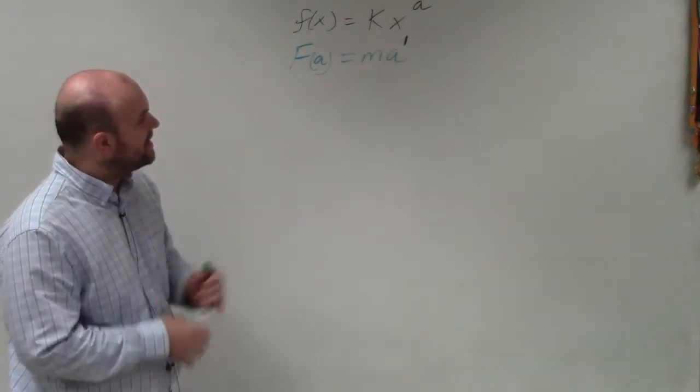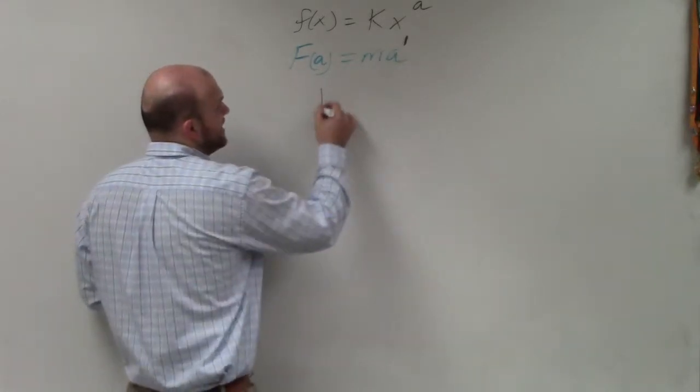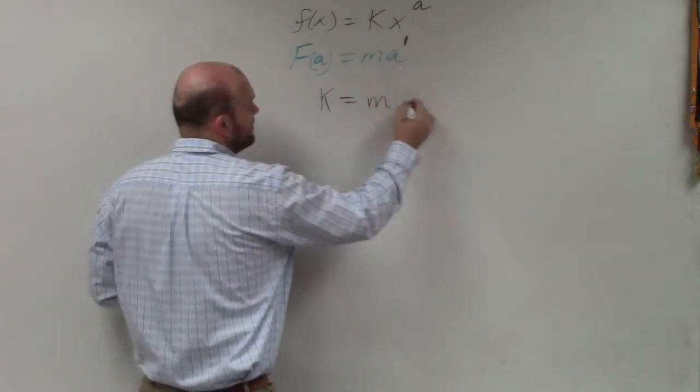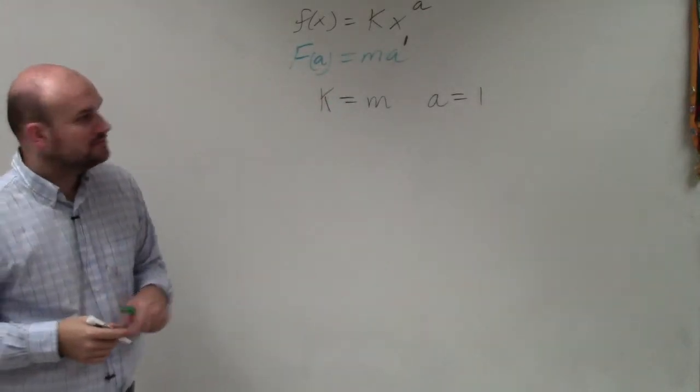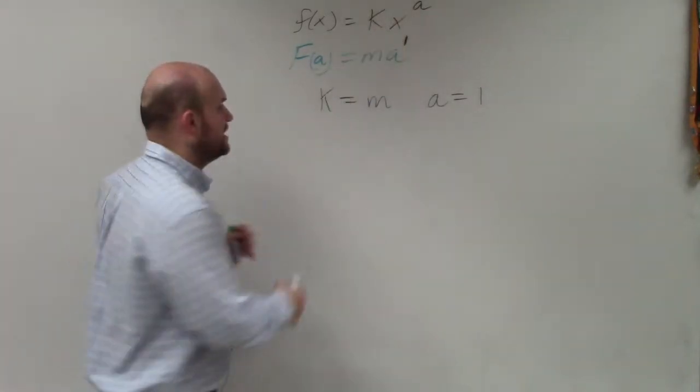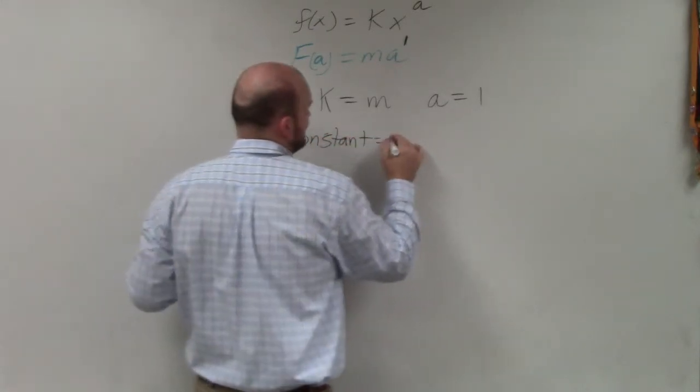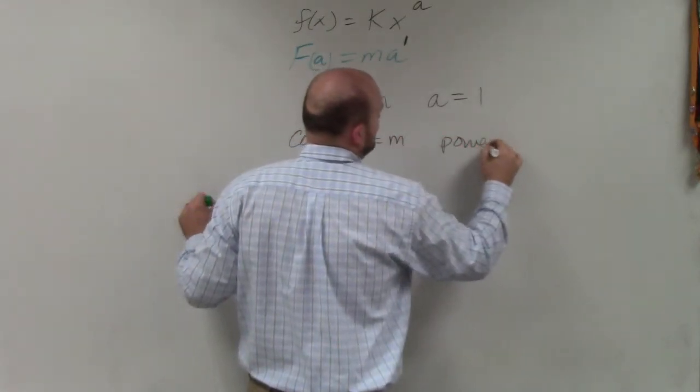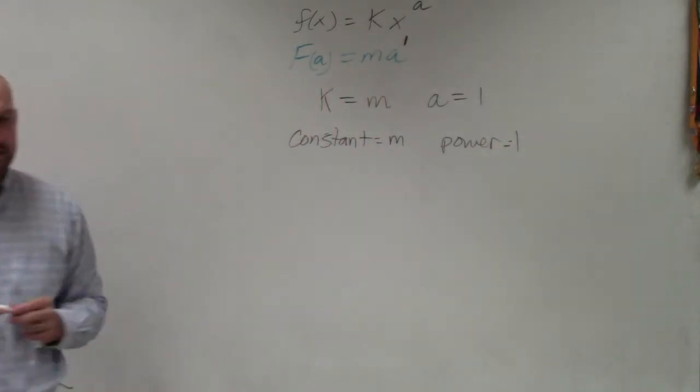So as you guys can see, we have a constant and we have our power. So I'd just say my k is equal to m and my a, in this case, is 1. a as far as your power, right? Constant, it might be confusing. Constant is m. Your power is 1. So it doesn't have a number in front of it, it's just 1. Okay. We'll be fine.